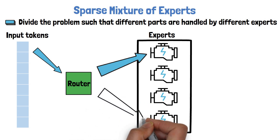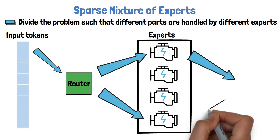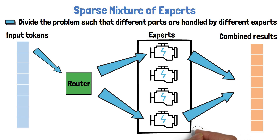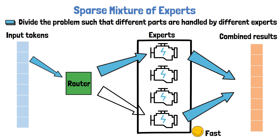More commonly, the Router chooses more than one expert for each token. So in this example we choose 2 experts out of 4. The chosen experts yield outputs which we combine together. These experts can be smaller than if we would use one large model to process all tokens, and they can run in parallel, so this is why the computational cost is reduced. The flow is repeated for each input token, so the second token also passes via the Router, and the Router can choose different experts for it. For example, here it chooses the top expert, same as before, and the third expert instead of the last.